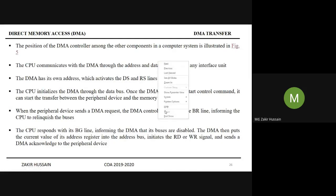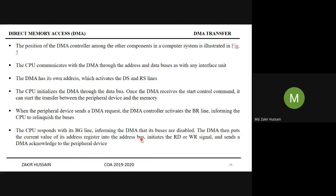The peripheral device sends a DMA request, and the DMA controller activates the BR (bus request) line, informing the CPU to relinquish the buses. The CPU responds with its BG (bus grant) line, informing the DMA that its buses are disabled. The DMA then puts the current value of its address register onto the address bus, initiates the read or write signal, and sends a DMA acknowledge to the peripheral device.